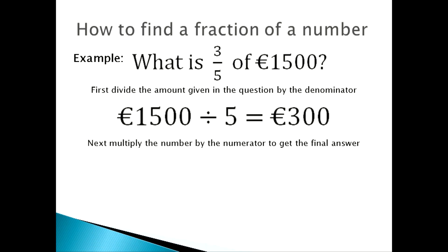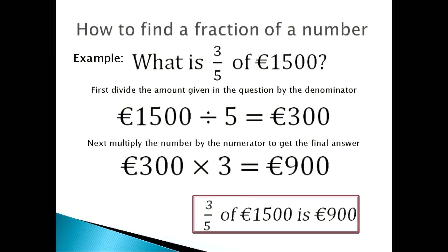Next, you'll multiply the number by the numerator to get the final answer. The numerator is the top number in the fraction, so you would do 300 times 3 and you get 900 euros. So, 3 over 5 of 1500 euros is 900 euros. That's an example of how to find a fraction of a number.